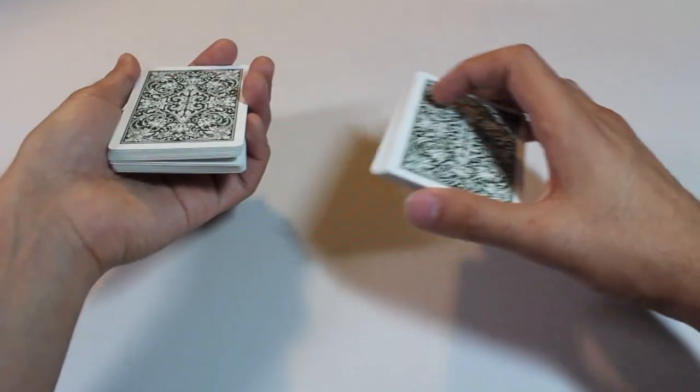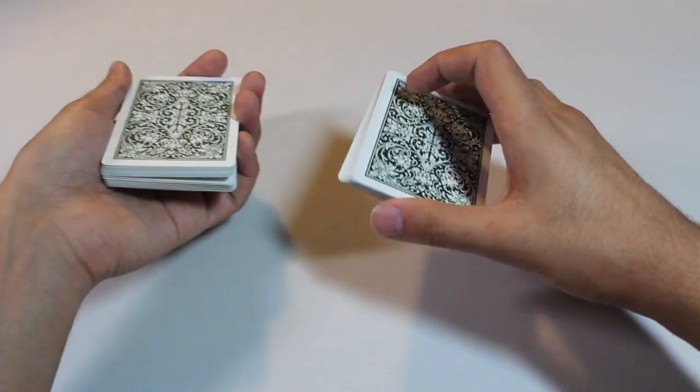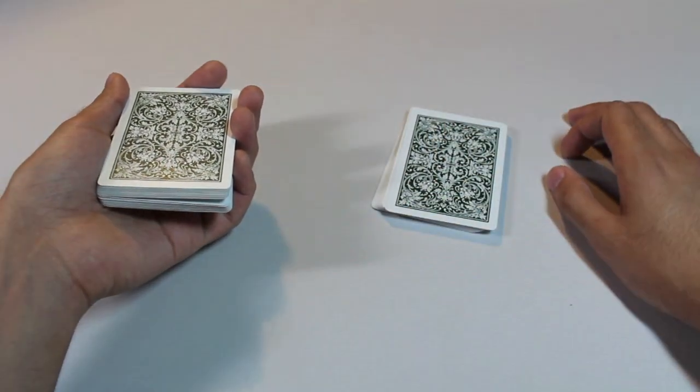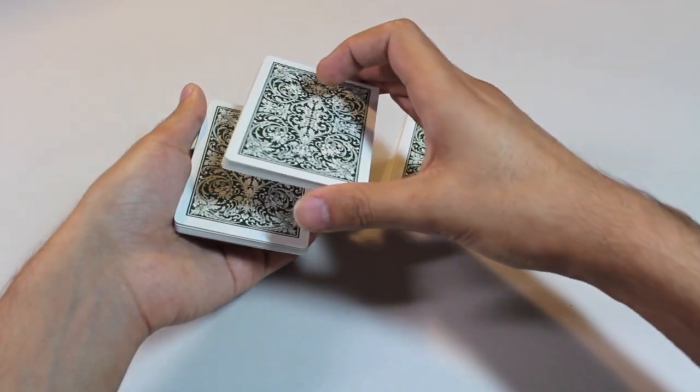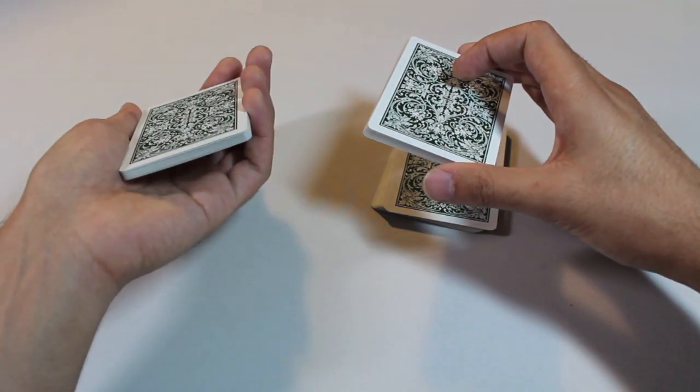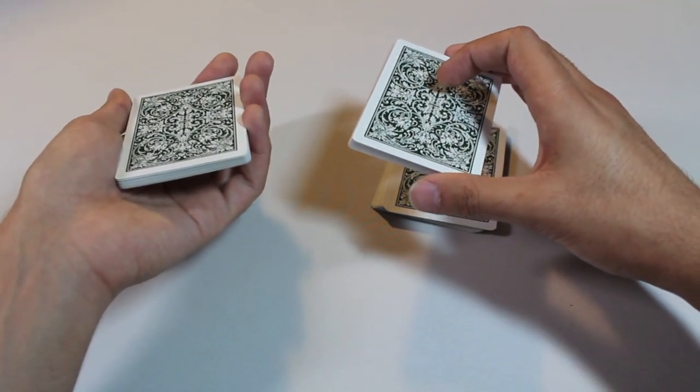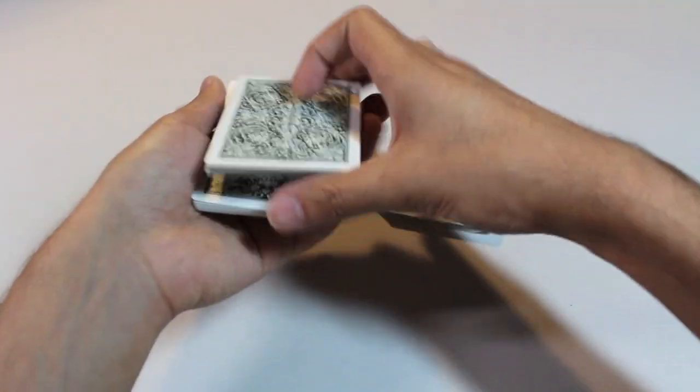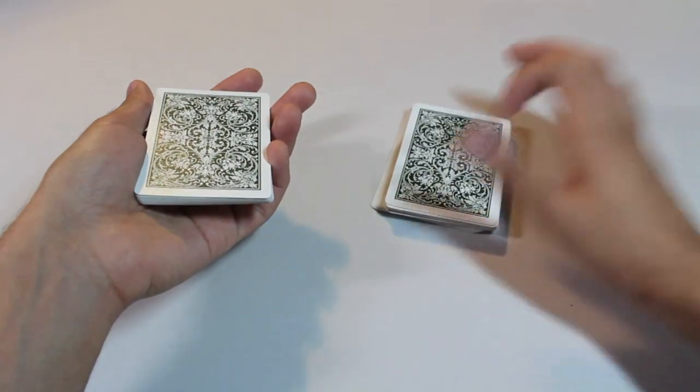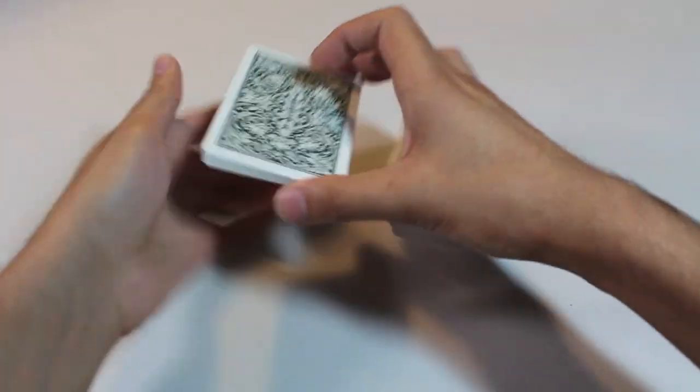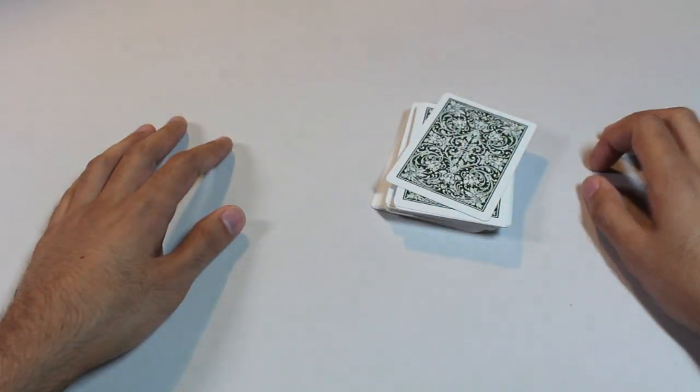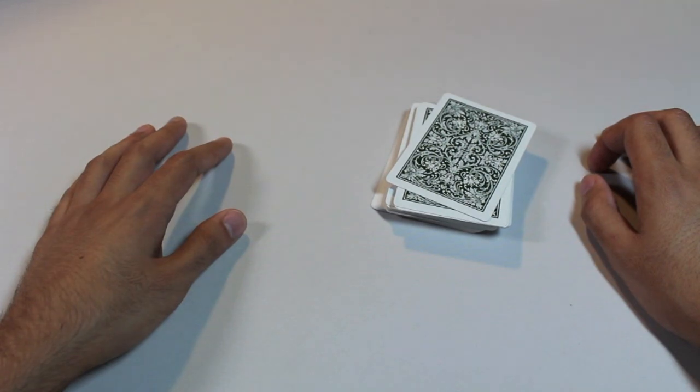Once you're in this position you're going to take your remaining right hand cards and place them on the table. Pick up all the cards above the left pinky break. Pick up all the cards above the break, place them on top of the table packet, and take the remaining cards and place them on top of the table. And you're done.